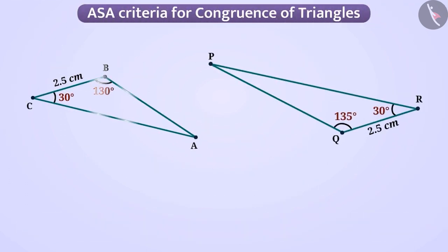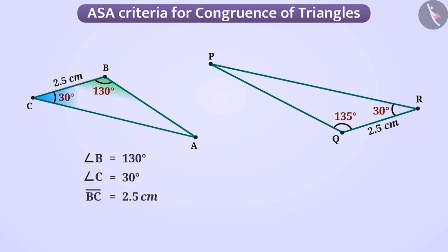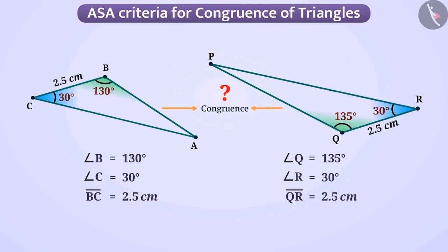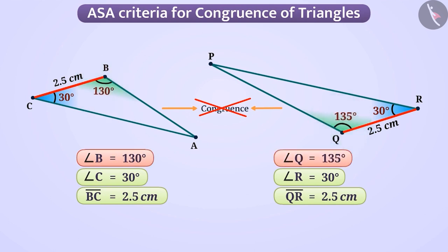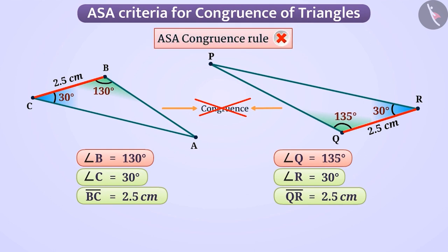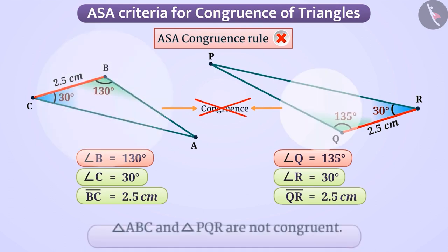Look at these two triangles. In triangle ABC, angle B is equal to 130 degrees, angle C is equal to 30 degrees, and the length of the included side BC is equal to 2.5 cm. In triangle PQR, angle Q is equal to 135 degrees, angle R is equal to 30 degrees, and the included side QR is equal to 2.5 cm. We cannot call them congruent because angle C equals angle R and side BC equals side QR, but angle B is not equal to angle Q. This means we cannot use the ASA criterion here, and therefore both triangles are not congruent.